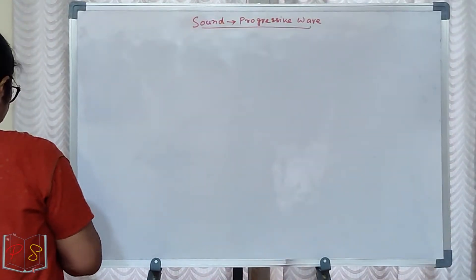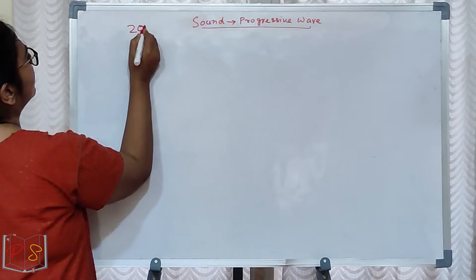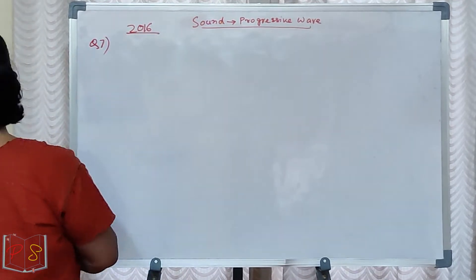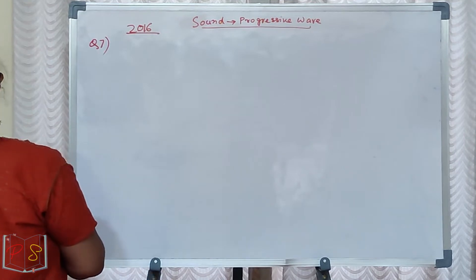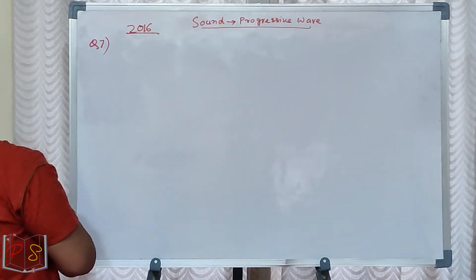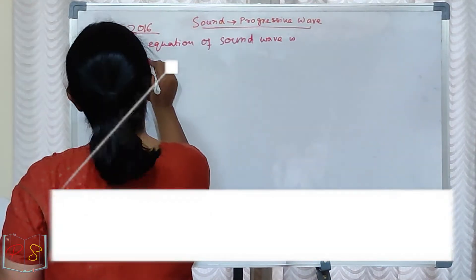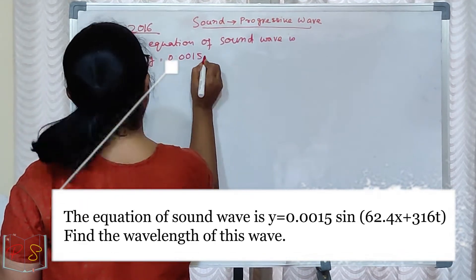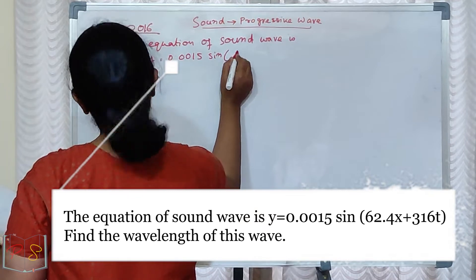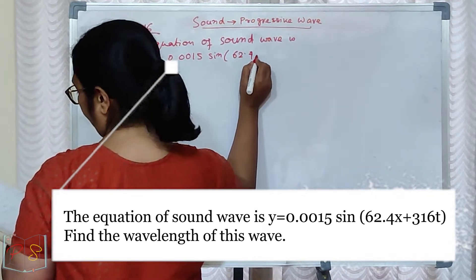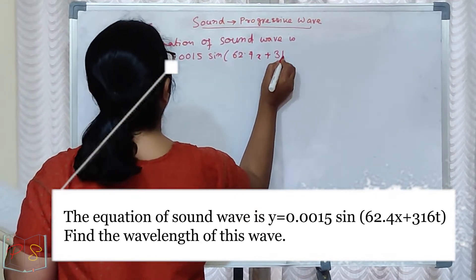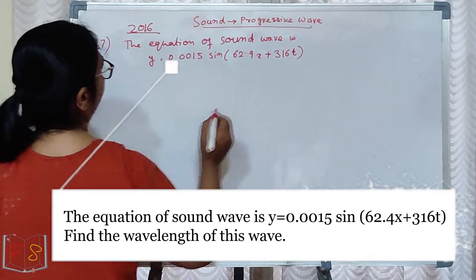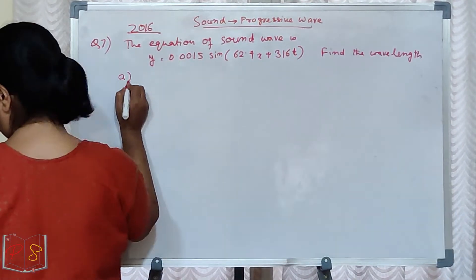In 2016, question number 7. The equation of sound wave is y equal to 0.0015 sin 62.4x plus 316t. Find the wavelength of this wave.